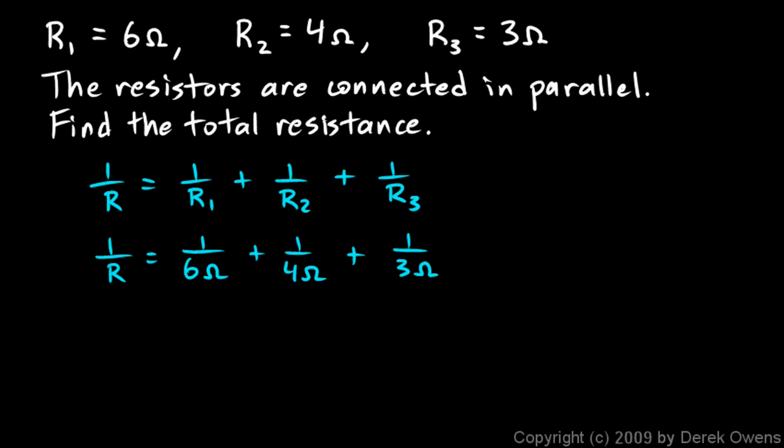1 over R is going to be 1 over 6 ohms plus 1 over 4 ohms plus 1 over 3 ohms. Now take the calculator and do 1 divided by 6, and that gives you 0.1667, and the unit here is one over ohms, because the ohms here is in the denominator. And then the next one, if we do 1 over 4, that gives us exactly 0.25 one over ohms. And then 1 over 3 gives us 0.3333 one over ohms.